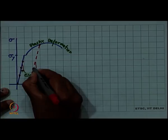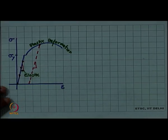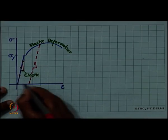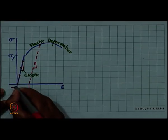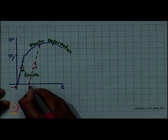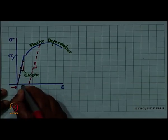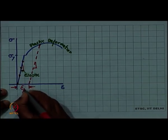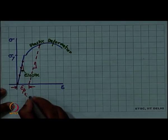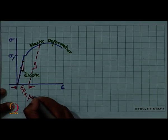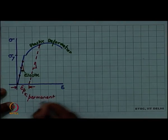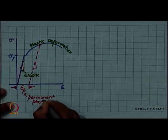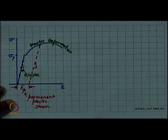The slope is not changed, that is the same, which means even at zero stress, so much of a strain is left. This is the plastic strain which is left in the material, this is permanent plastic strain.